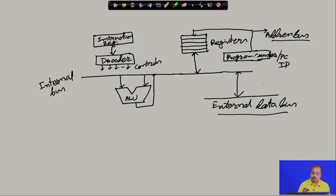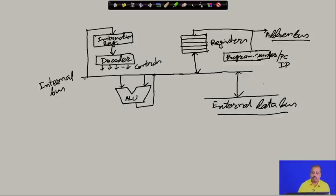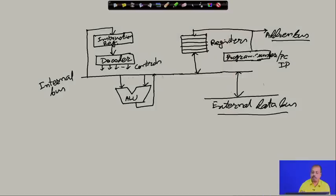When an instruction is first coming in, it has to be loaded onto the instruction register. The instruction register has a connection from the data bus, so the instruction comes via the external data bus and goes to the instruction register. The content of the instruction register is then decoded by the decoder, which generates a set of control signals to control various operations. For example, if the instruction is to add the content of two registers, the register contents should be available on the bus, the ALU should do the addition, and then the result should be stored back to some register or memory location. We will take an example to understand how these control signals are generated.